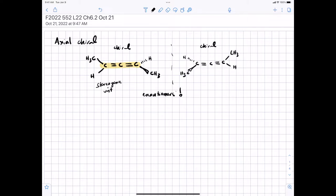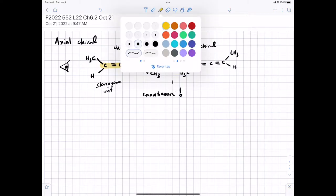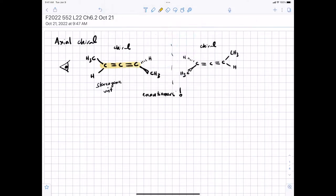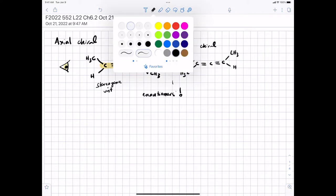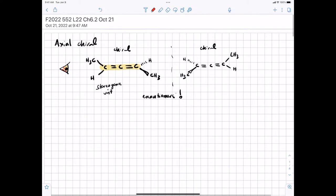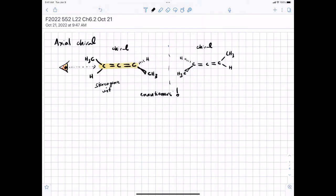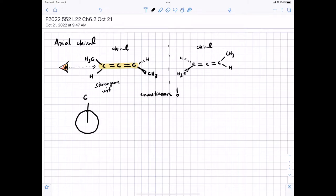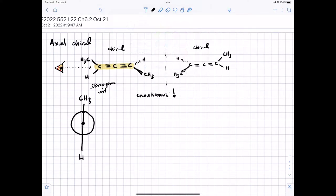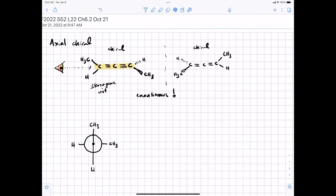We're going to draw the Newman projection looking down the bond between the SP hybridized carbon in the middle with the SP2 hybridized carbons in the front and the back, respectively. I can't ever resist drawing Sith eyes. So we're looking down, what would we see?